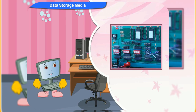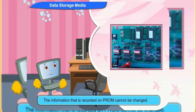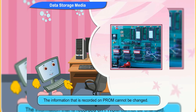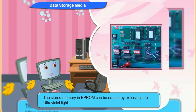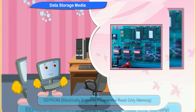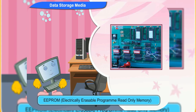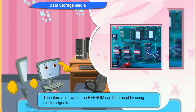PROM, EPROM and EEPROM are three different kinds of ROM. PROM stands for Programmable Read-Only Memory. The information that is recorded on this cannot be changed. EPROM stands for Erasable Programmable Read-Only Memory. The stored memory can be erased by exposing it to ultraviolet light. EEPROM stands for Electrically Erasable Programmable Read-Only Memory. The information written on it can be erased by using electric signals. This memory type is more flexible than EPROM.